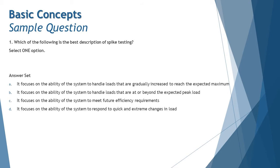apply to spike at all. Option C: it focuses on the ability of system to meet future efficiency requirements. That goes with the definition of scalability testing, not spike. We are just left with option D: it focuses on the ability of the system to respond to quick and extreme changes in the load, which is just like a sudden increment in the load, called a spike in the graph. So the right answer here is D. Now you know that if you just remember the definition of all the different types of performance testing,